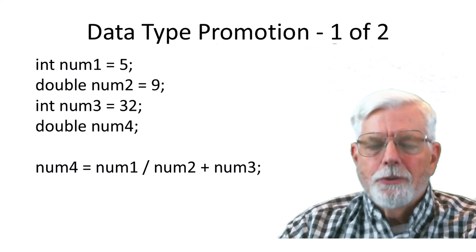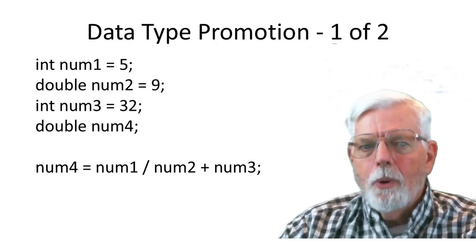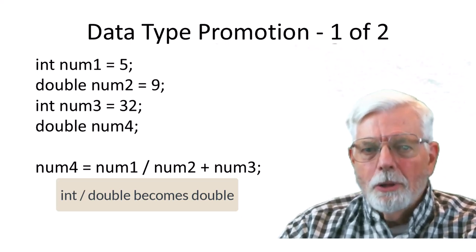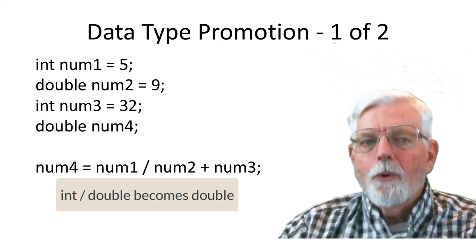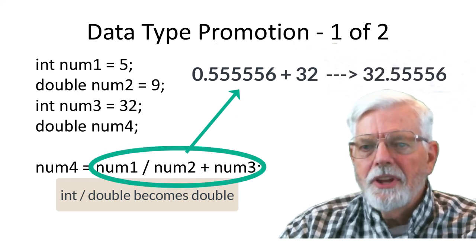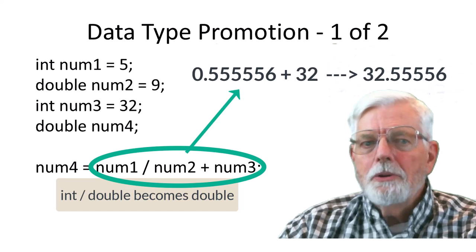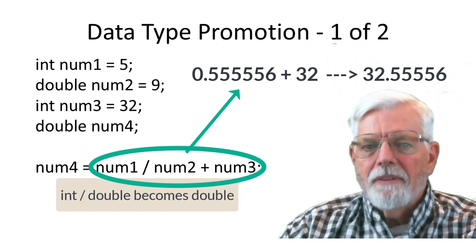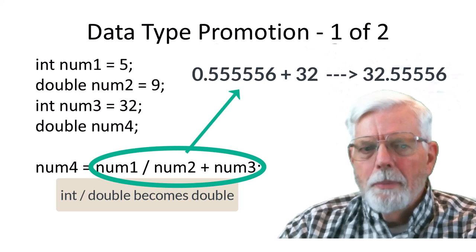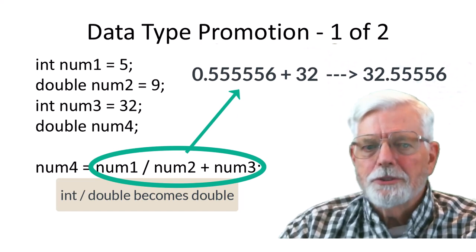Looking at the declarations for these variables. NUM1 and NUM3 are integers while NUM2 and NUM4 are floating point variables. The first math operation is NUM1 divided by NUM2. Since NUM2 is a double, NUM1 is promoted to a double before the division occurs. The result of the division is a double, 0.555556, which is then added to the NUM3 integer. Since the result of the division is a double, NUM3 is promoted to a double and the result is 32.555556. The assignment operator, equal sign, is evaluated right to left, which means that everything on the right side of the equal sign gets evaluated first before the result is placed into NUM4.